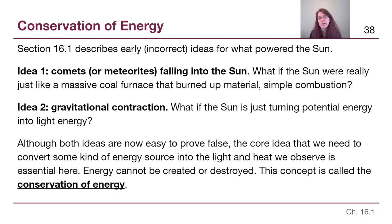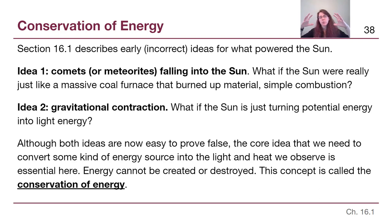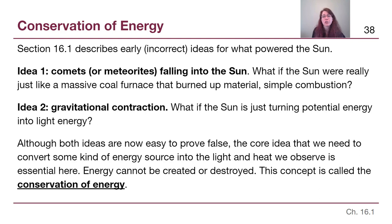The second idea is gravitational contraction. In physics, if we have an object that we compress down into something smaller, it tends to heat up. When all of the mass is more separated, it has a lot of gravitational potential energy. When the mass is concentrated and closer together, it has less gravitational potential energy. So what if the sun is just turning that gravitational potential energy into light and heat?